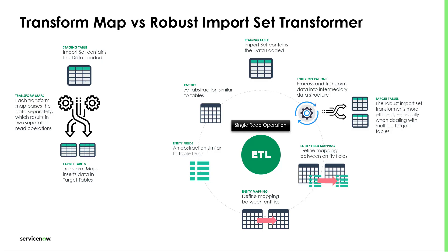Let's get started by revisiting the differences between the transform map and the robust import set transformer. In the regular data load fashion, we define the import set table, also known as the staging table, with the data we want to manipulate. Then we have to define a transfer map to run operations over the data and finally transfer the data to the target table.